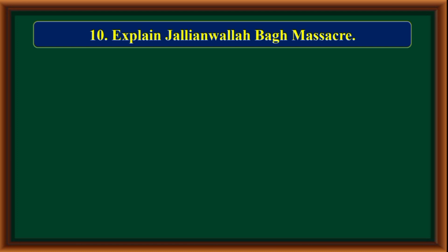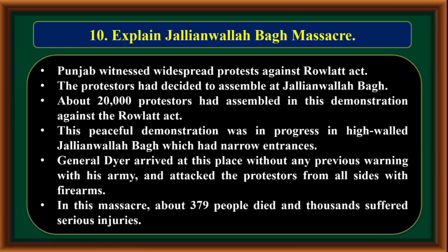Explain the Jallianwala Bagh Massacre. Punjab witnessed widespread protests against the Rowlatt Act. The protesters had decided to assemble at Jallianwala Bagh. About 20,000 protesters had assembled in a peaceful demonstration against the Rowlatt Act in the high-walled Jallianwala Bagh, which had narrow entrances. General Dyer arrived without any previous warning with his army and attacked the protesters from all sides with firearms. In this massacre, about 379 people died and thousands suffered serious injuries.